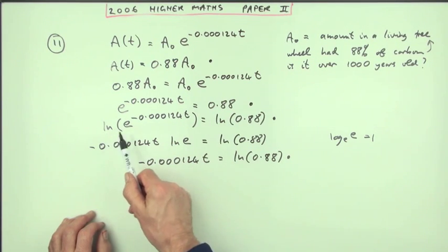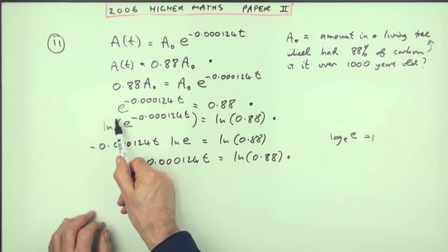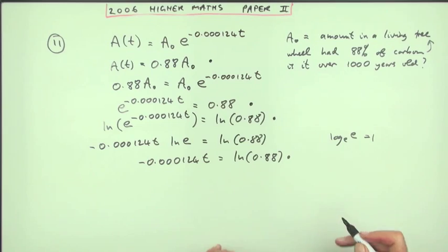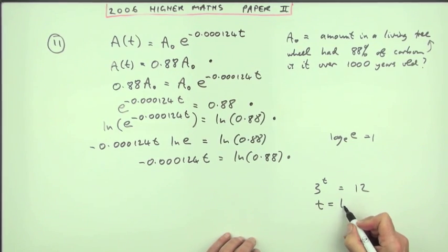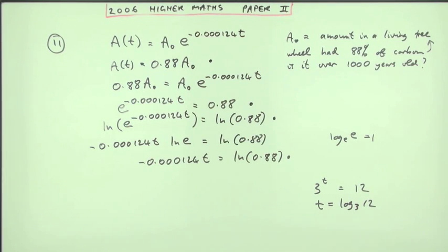The only time you would really need to take logs of both sides would be when this was some base that you didn't have access to. If it was something like 3 to the power t equals 12, I'm not going to write t equals log base 3 of 12 if I haven't got access to log base 3. I'd have to take log base 10 of 3 to the t is log base 10 of 12. Now the t can pop out and divide by that log base 3. So log base 10 of 12 over log base 10 of 3. You would have to take logs of both sides if you didn't have access to a log of that particular base for the exponential. But here you do.